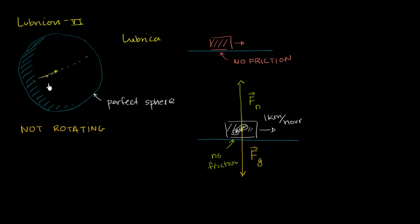If you assume Earth is a sphere — and it's not a perfect sphere, but if you assume it's a sphere — our equator would be a perfect circle. But in order to have an equator, you need to have some rotation. So we'll just say the sock is traveling along the largest possible circle it can travel along — one of the great circles of this sphere, this block of sock right over there.